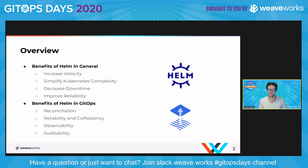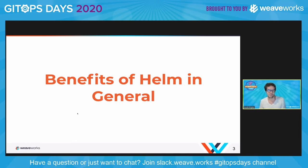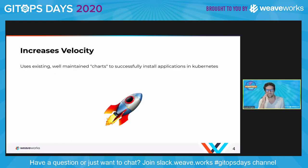So first, I'm going to be going over the benefits of running Helm — the business benefits specifically of running Helm, no matter how you run it — mainly as a way to set up a comparison with the additional layer of benefits you get when you run Helm with GitOps. The very first benefit, I'm not sure how many people in the audience know, is that running Helm in general increases team velocity.